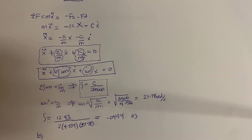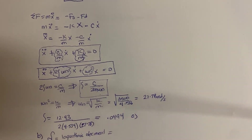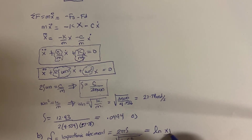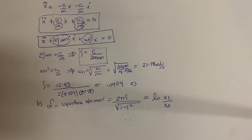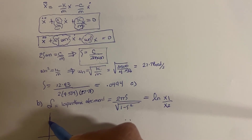Now let's work on part B, where we are asked to find the logarithmic decrement. We know it is equal to 2π times the damping ratio over the square root of 1 minus damping ratio squared, which is also equal to the natural logarithm of x1 over x2. Physically, when the system is vibrating, we can chart the motion versus time for a damped system and we get a decaying wave.